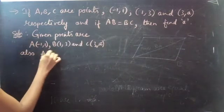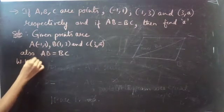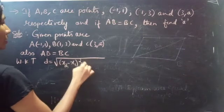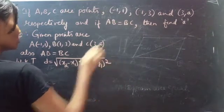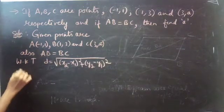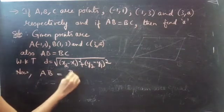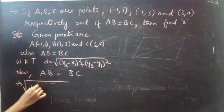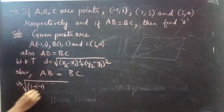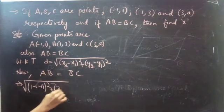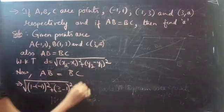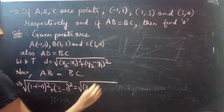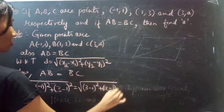Also given condition AB equals to BC. We know that the distance between any two points is given by D equals to square root of (X2 minus X1) whole square plus (Y2 minus Y1) whole square. Now we will consider the condition AB equals to BC, which gives square root of (1 minus (-1)) whole square plus (3 minus 1) whole square equals to square root of (3 minus 1) whole square plus (a minus 3) whole square.